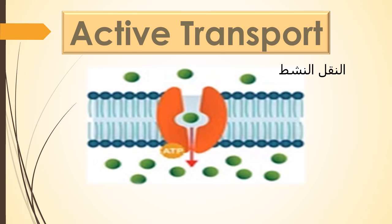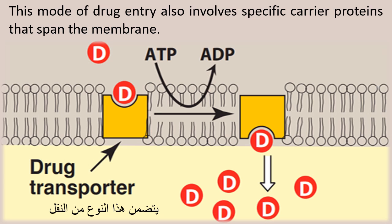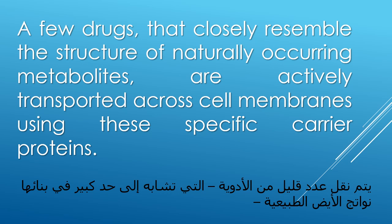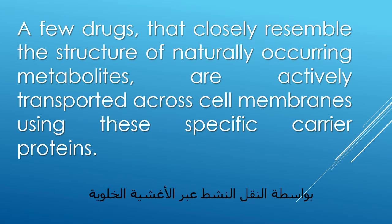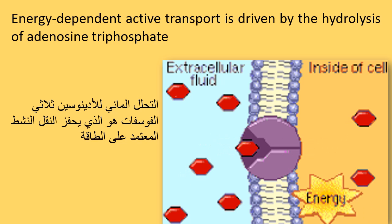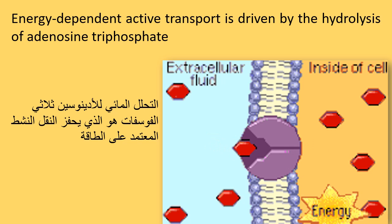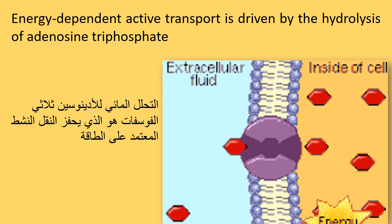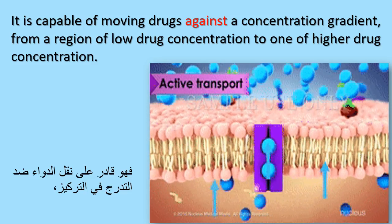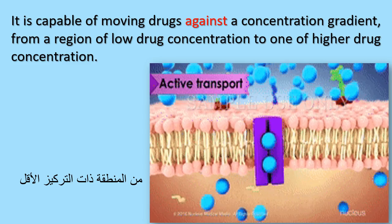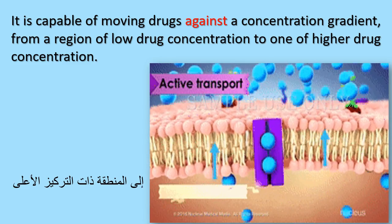Active transport. This mode of drug entry also involves specific carrier proteins that span the membrane. A few drugs that closely resemble the structure of naturally occurring metabolites are actively transported across some membranes using these specific carrier proteins. Energy-dependent active transport is driven by the hydrolysis of adenosine triphosphate. It is capable of moving drugs against a concentration gradient, from a region of low drug concentration to one of higher drug concentration.